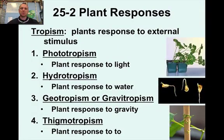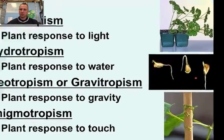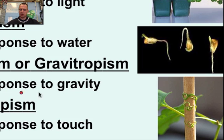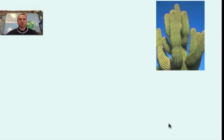The last one is thigmotropism. Thigmotropism is a plant's response to touch. We often think of pole beans — you can see the plant growing up by attaching to other plants. So that is thigmotropism.